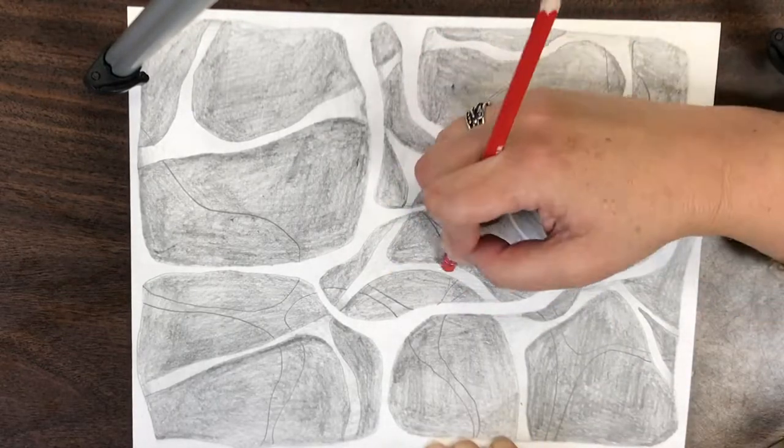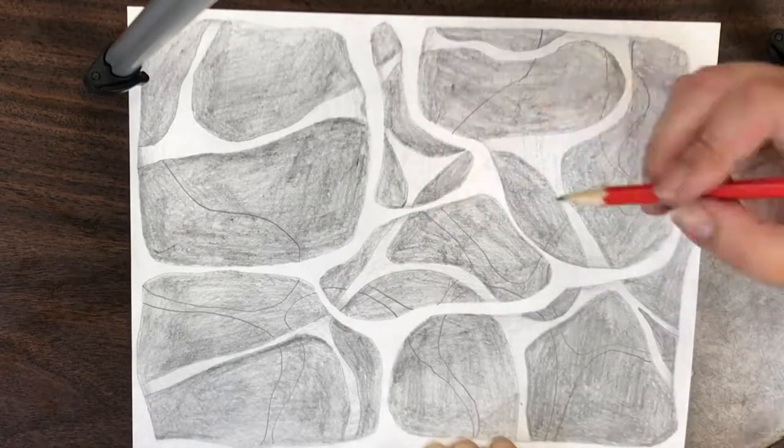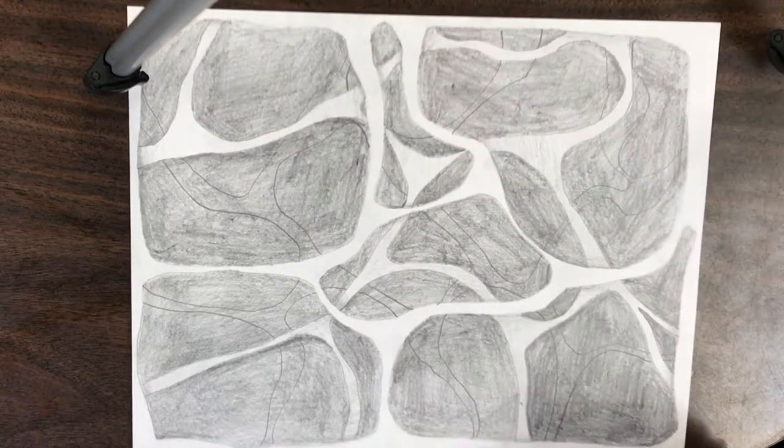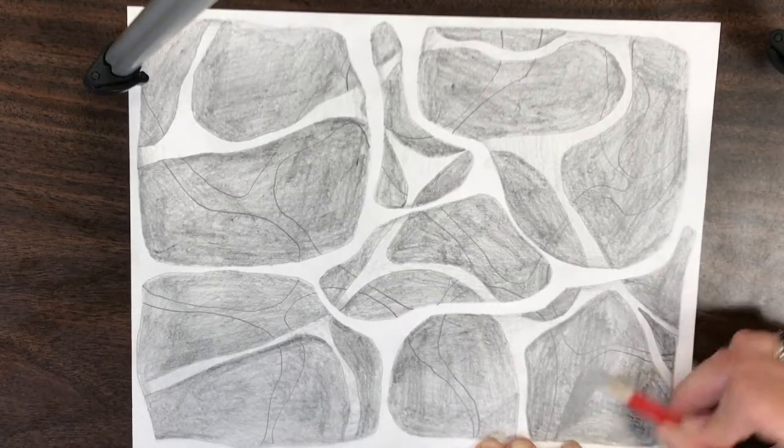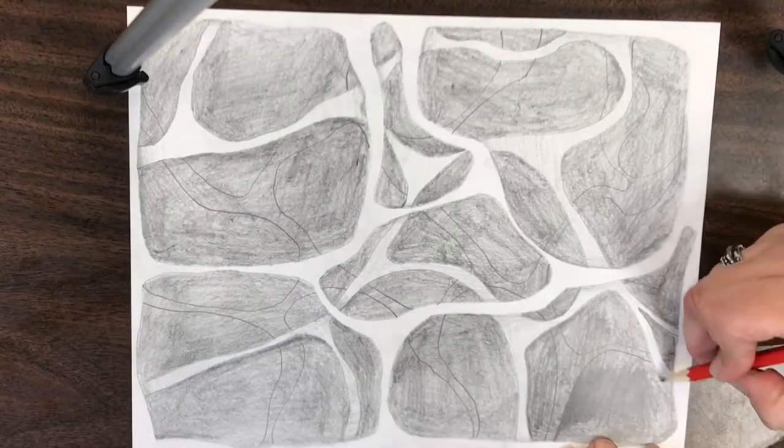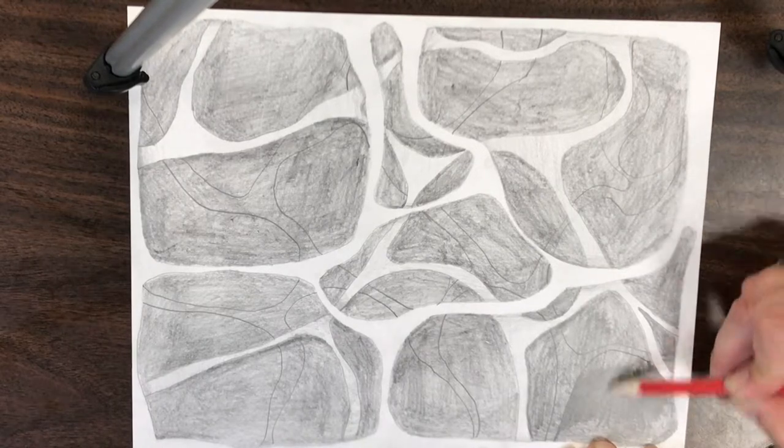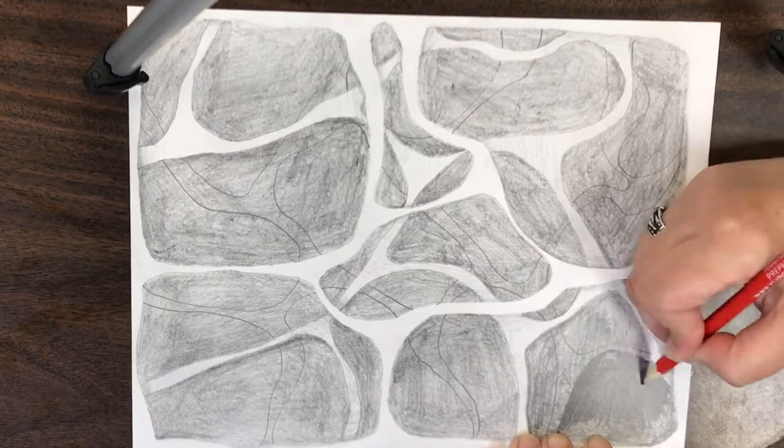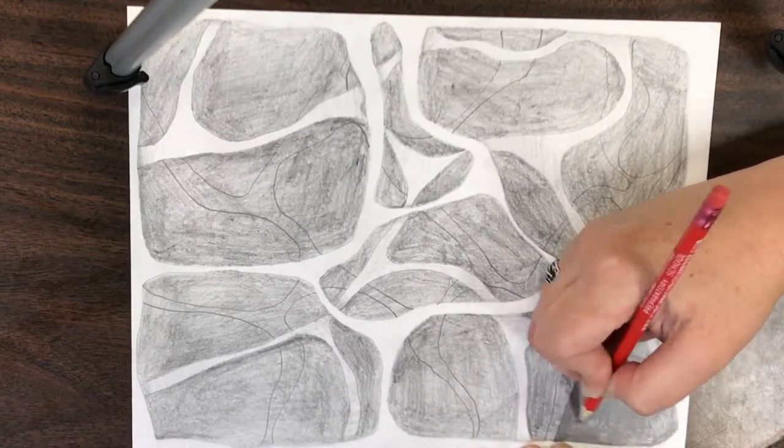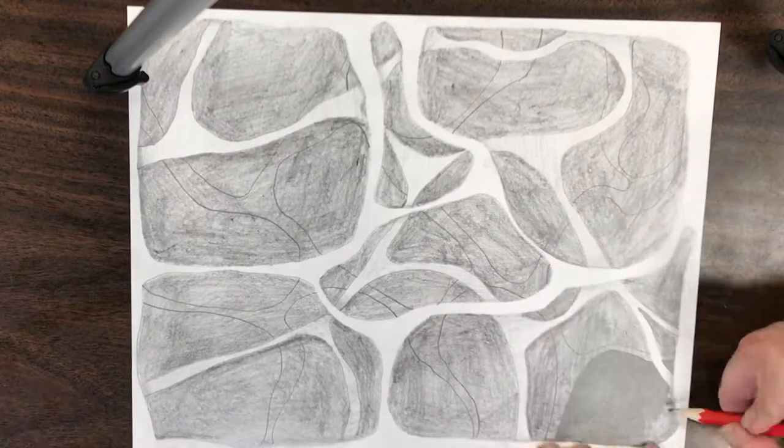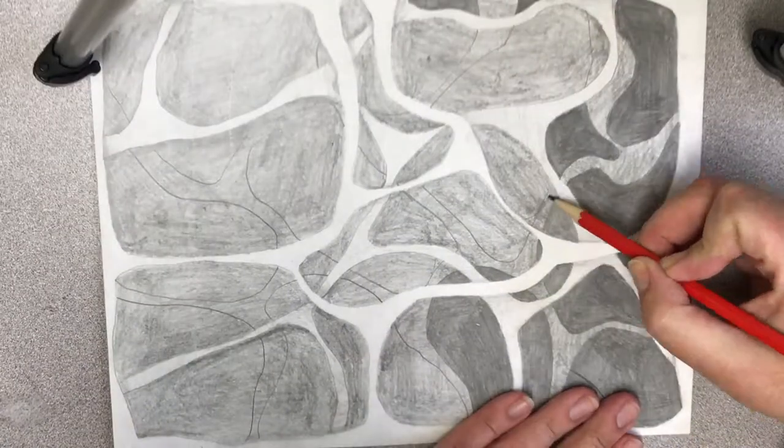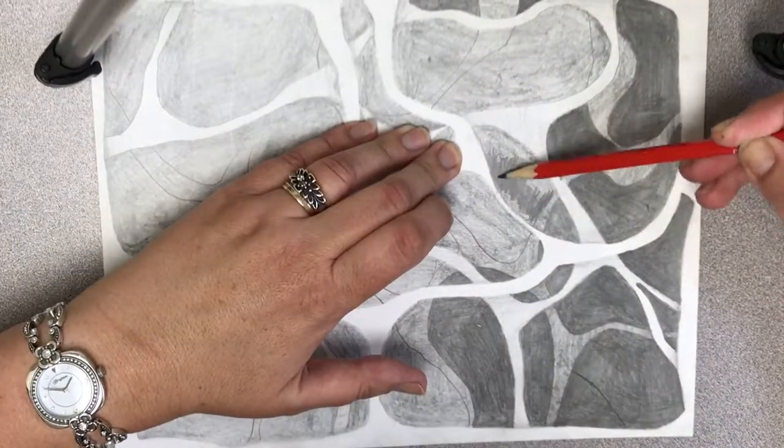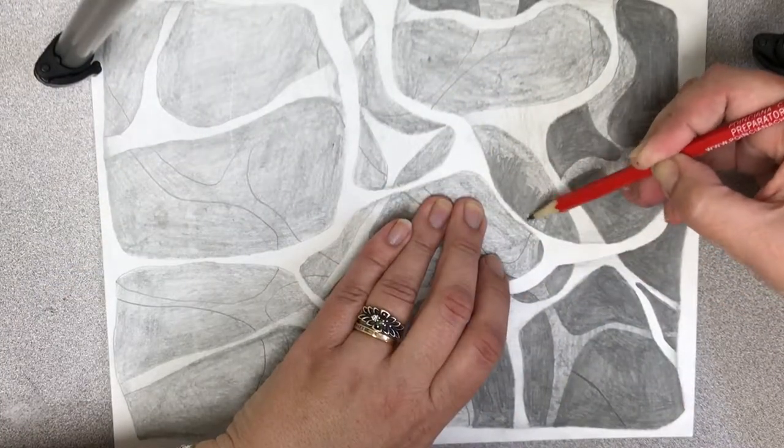Once I've got the organic shapes drawn in again, applying a little bit more pressure. See how it's getting pretty dark now, but it's not as hard as I can get it because I still have one more layer after this layer.